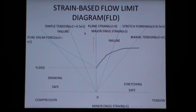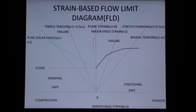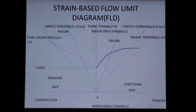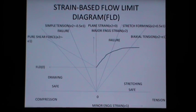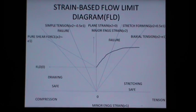Two key parameters are used: beta (β = σ2/σ1, the ratio of major to minor engineering stress) and alpha (α = e2/e1). For biaxial tension, α = +1; for stretch forming, α = +0.5; for plane strain, α = 0; for simple tension, α = −0.5; and for pure shear, α = −1.